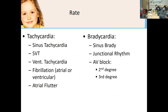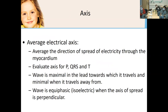Tachycardias include sinus tachycardia, reentry tachycardia, ventricular tachycardia, and atrial fibrillation and flutter. Bradycardias include sinus bradycardia, junctional rhythm, and AV blocks such as second and third degree. The average axis informs about the direction of the electrical current. You can assess the axis of both the P wave and QRS. Assessing the P wave axis tells you whether the rhythm is actually sinus — meaning it originates from the SA node.